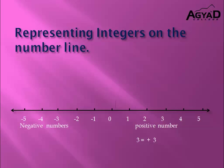Now, it's time to represent integers on the number line. We draw a straight line, put 0 in the middle, the positive numbers are to the right of 0, and the negative numbers are to the left of 0. Every number to the right of 0 is bigger than 0, but negative numbers are smaller than 0.